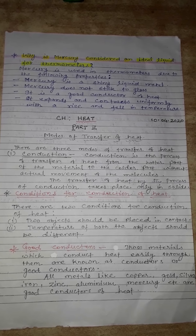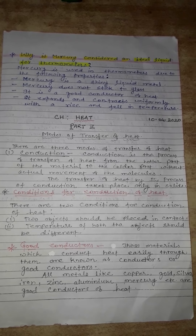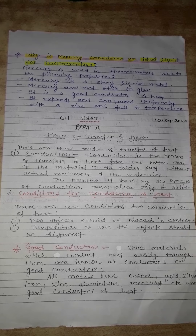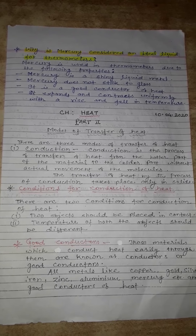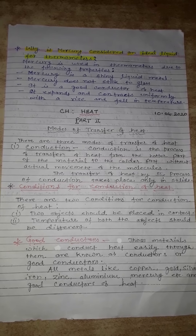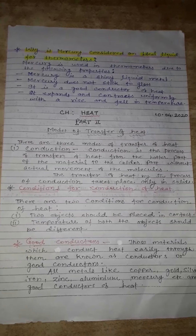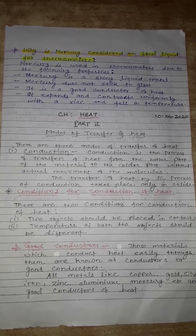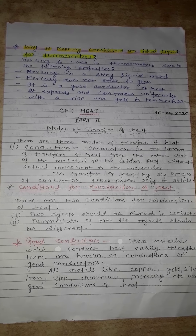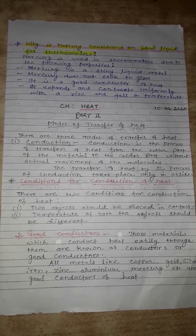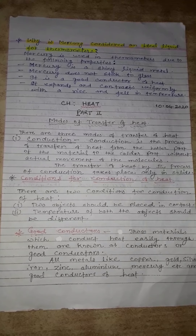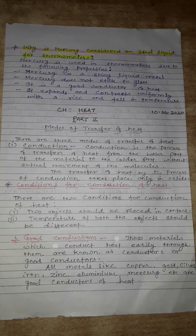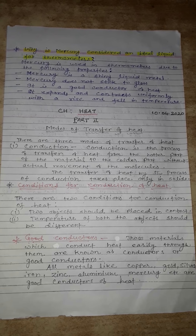We have learned in last class that heat flows from a hotter object to a colder object until both objects reach the same temperature. How does this transfer of heat energy take place? The transfer of heat energy can take place in three different ways — three modes of transfer of heat. First is conduction, second is convection, and third is radiation.